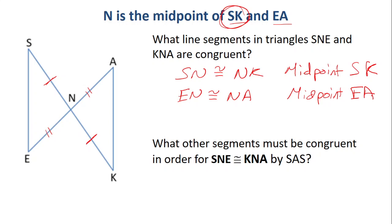This is where we stopped yesterday because we didn't know that SE and AK were congruent. So we couldn't just do side, side, side. However, this is a bow tie.